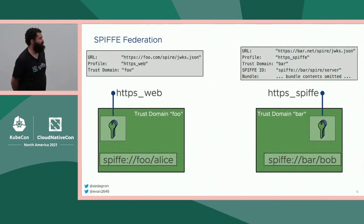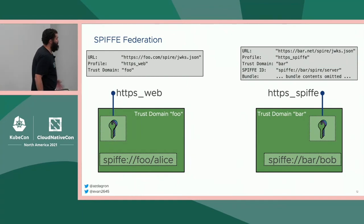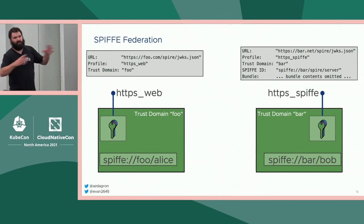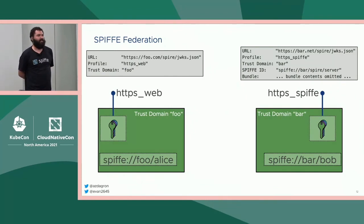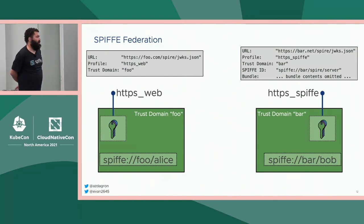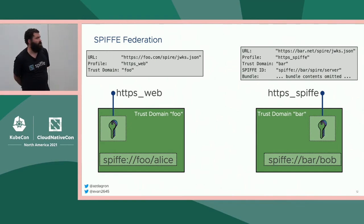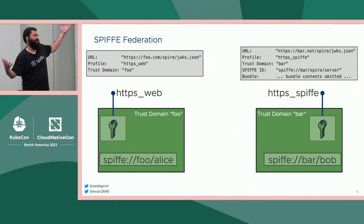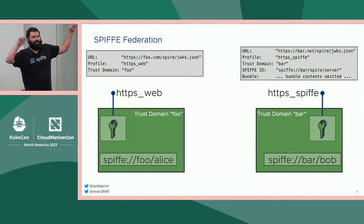You'll have software in each trust domain configured to go hit these endpoints, bring the bundles down, and distribute them. How bundles are distributed through your infrastructure is not defined by SPIFFE — you build some software that does this automation, grabs the bundle, and pushes it down to your workloads. The thing SPIFFE does define is the workload API — the API that workloads hit to get these bundles, their SVIDs, and all the other stuff. The plumbing between that workload API and everything above it is the SPIFFE implementation. Spire is a SPIFFE implementation — it does all that plumbing from bundle and signing all the way down to your workload.